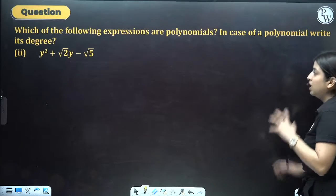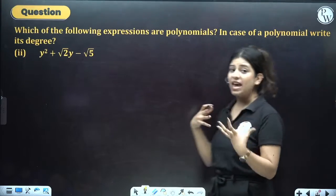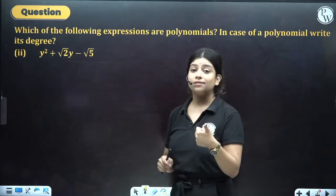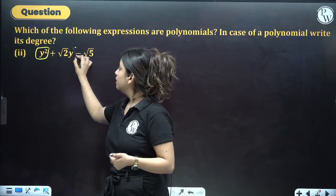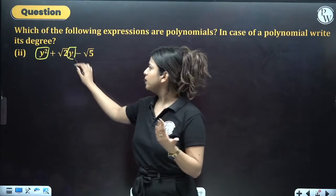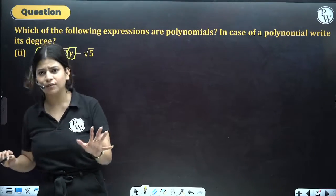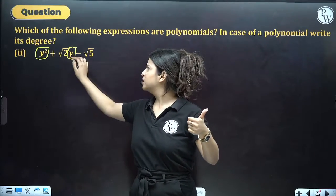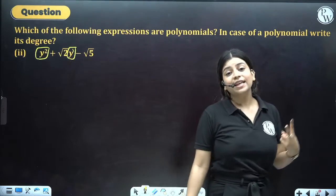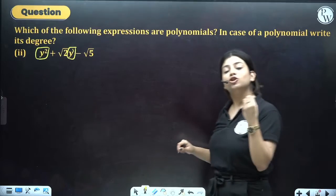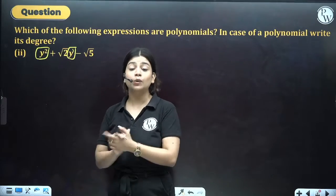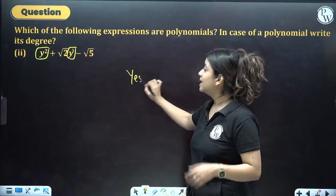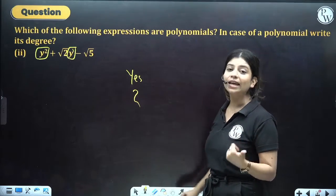The question asks which of the following expressions form a polynomial and, if yes, what will be its degree? Over here the variable is y. If someone gets confused with √2 — no, √2 is the coefficient, we don't worry about coefficients, only the variable. The power of the variable is 2 and 1 — both whole numbers, no fractional power, and no variable in the denominator. So yes, this is a polynomial and the highest power of the variable is 2, so the degree is 2.